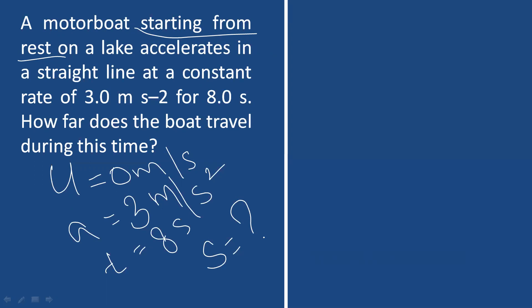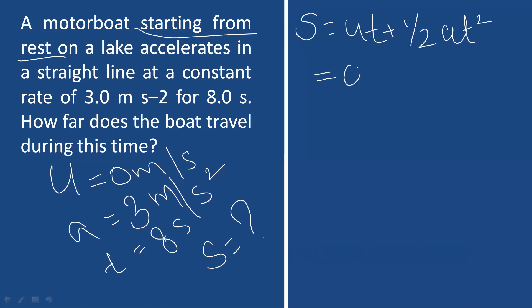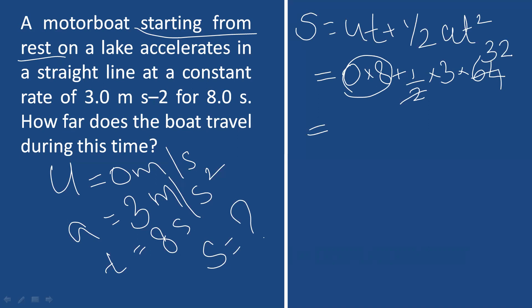We use the equation of motion where v is not needed. Using s = ut + ½at², with u = 0, t = 8, and a = 3: s = 0×8 + ½×3×64 = 3×32 = 96 meters.